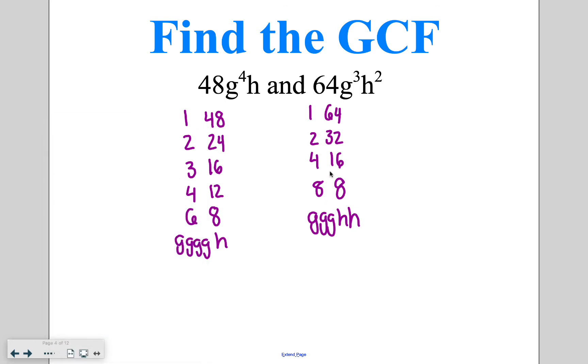Now to find the GCF we are looking for the largest number that appears on both lists. I like working backwards. 64 doesn't show up on both. 32 doesn't show up on both. 16 shows up on both lists as the largest number. So our GCF is going to include a factor of 16. I've got 3 g's that can be pulled out of each factor and 1 h that can be pulled out from each. So my GCF is going to be 16 g to the 3rd h.